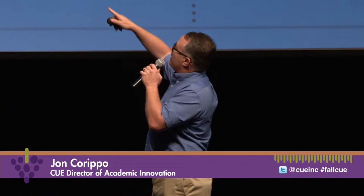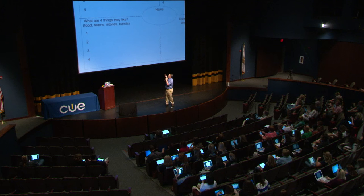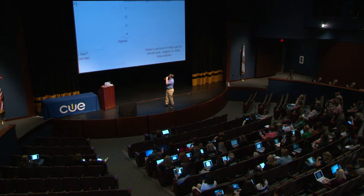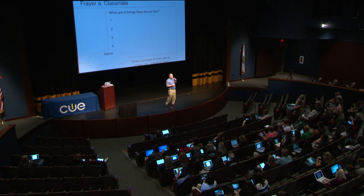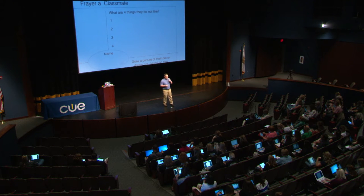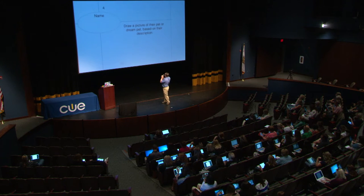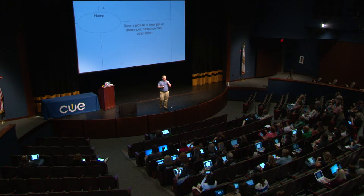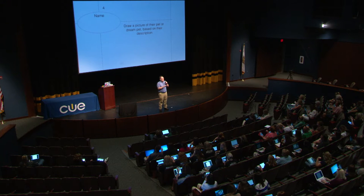The next thing you're going to ask is what are four things they do like — favorite foods, favorite teams, favorite movies, favorite bands. The next one is what are four things they do not like. And the last one — on the original it says draw a picture, but that's not going to work on a Google Form, so I changed it to describe their dream pet. That's up to you guys.